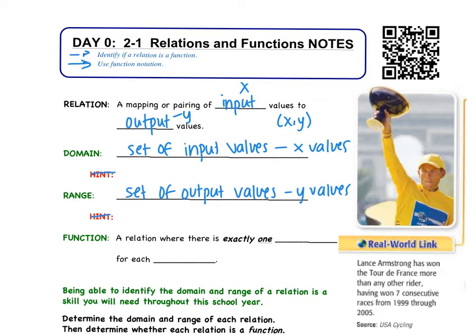And then, for a function, something is a function when it's a relation where there is exactly one output for each input. So every x has exactly one y.